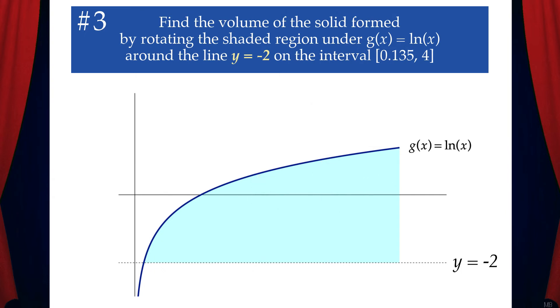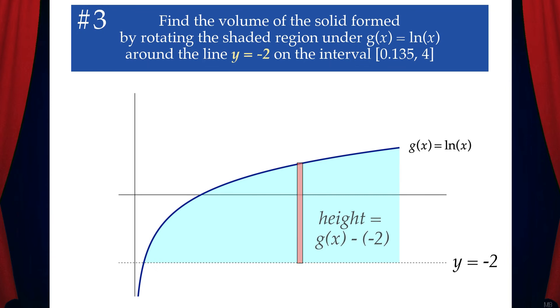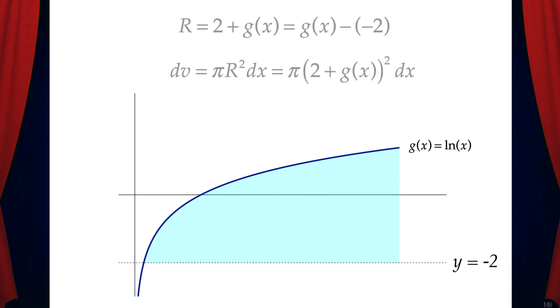Another way to think about this is by taking a rectangular sample strip. The height of the rectangle is g of x minus negative 2, which is the same thing as g of x plus 2.